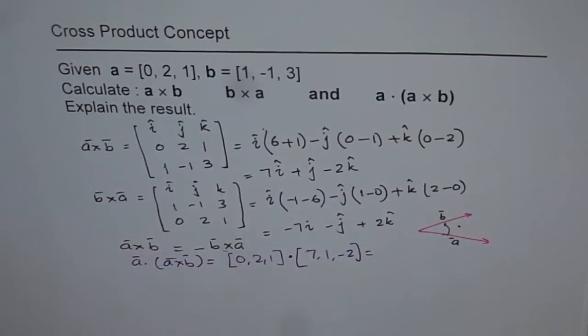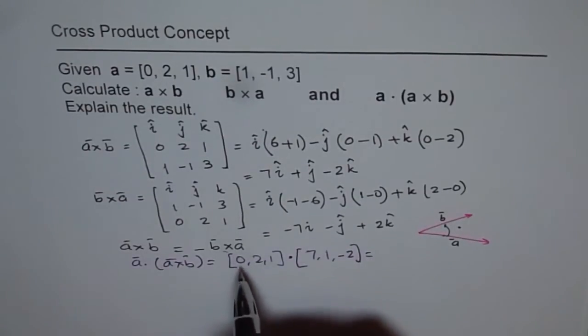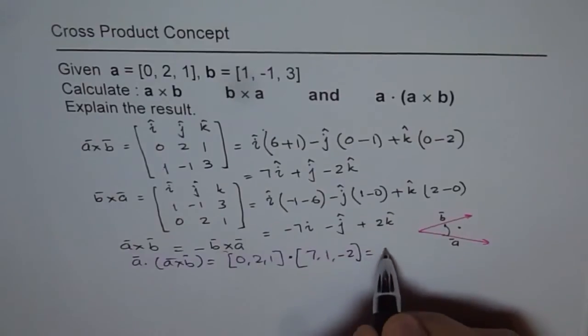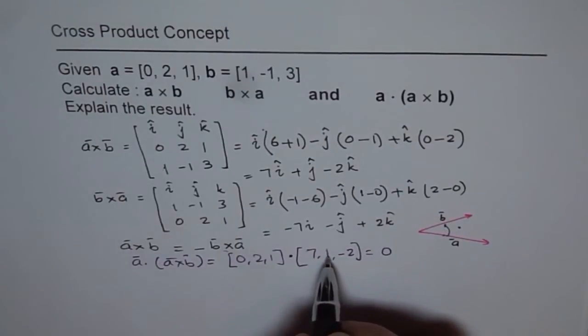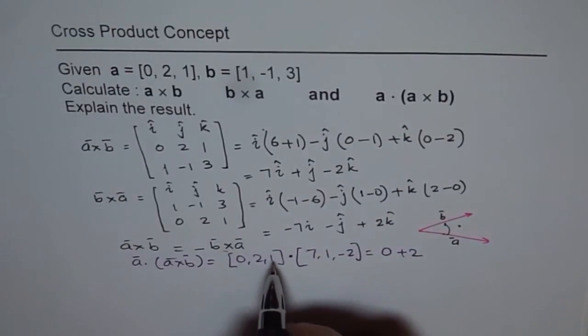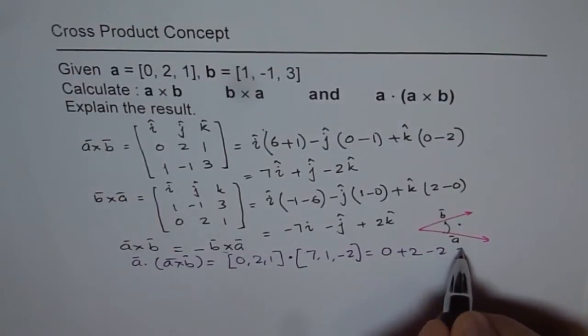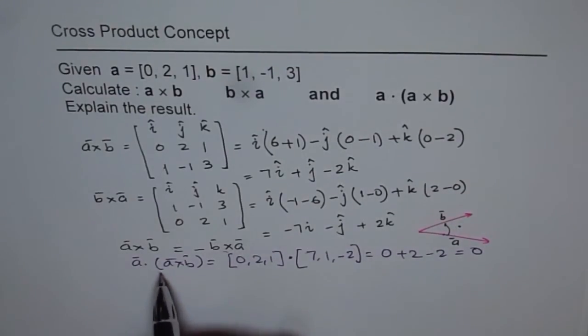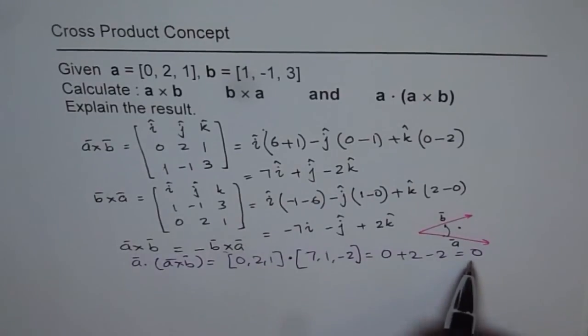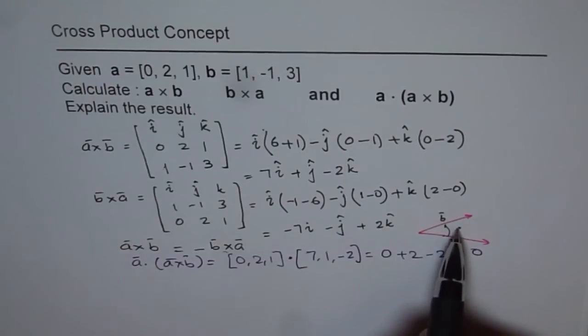When you do this dot product, what do you get? 7 times 0 is 0, 2 times 1 is plus 2, and dot product of 1 and minus 2 is minus 2, which is 0. Since the dot product of A with A cross B is 0, it shows that A cross B is perpendicular to A.